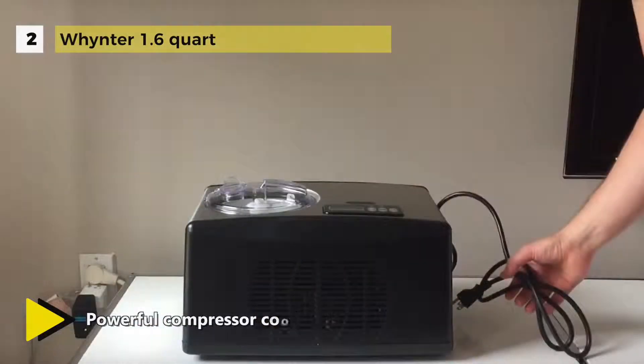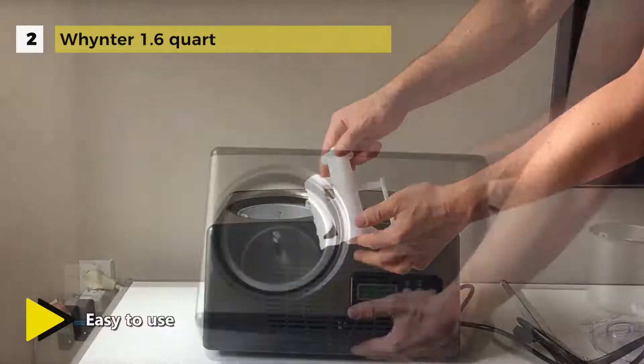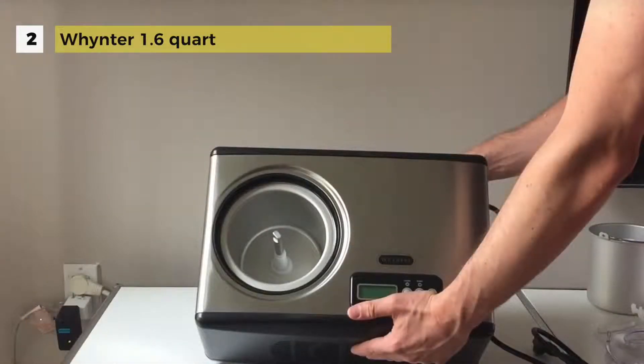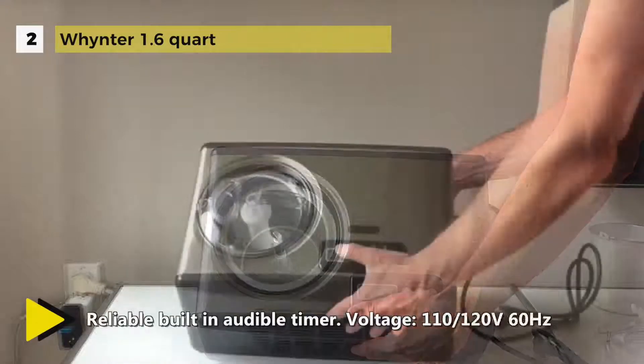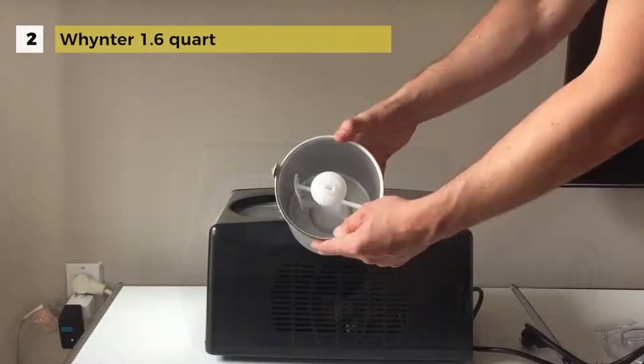Powerful compressor cooling makes it a self-contained frozen dessert maker that does not require pre-freezing. The removable bowl and BPA free churn blade allow for easy storage and effortless cleaning. A newly designed motor drive shuts off to prevent damage if the mixture freezes solid. It has a capacity of 1.6 quarts.